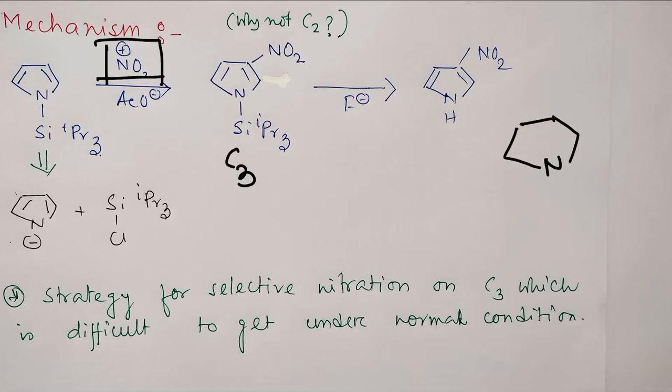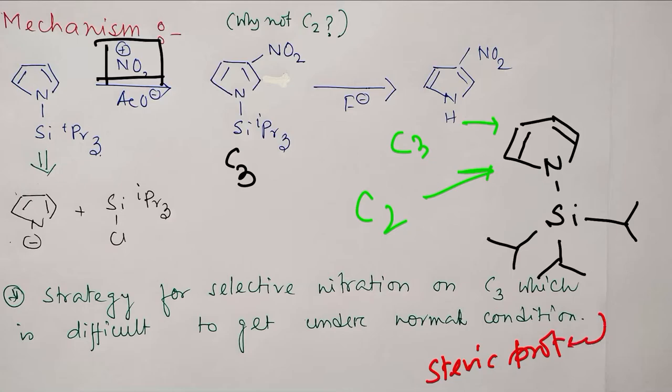For that you need to understand the structure. This is silicon, and these are three isopropyl groups. The question is why can't it attack the C2 position? This is due to steric protection.